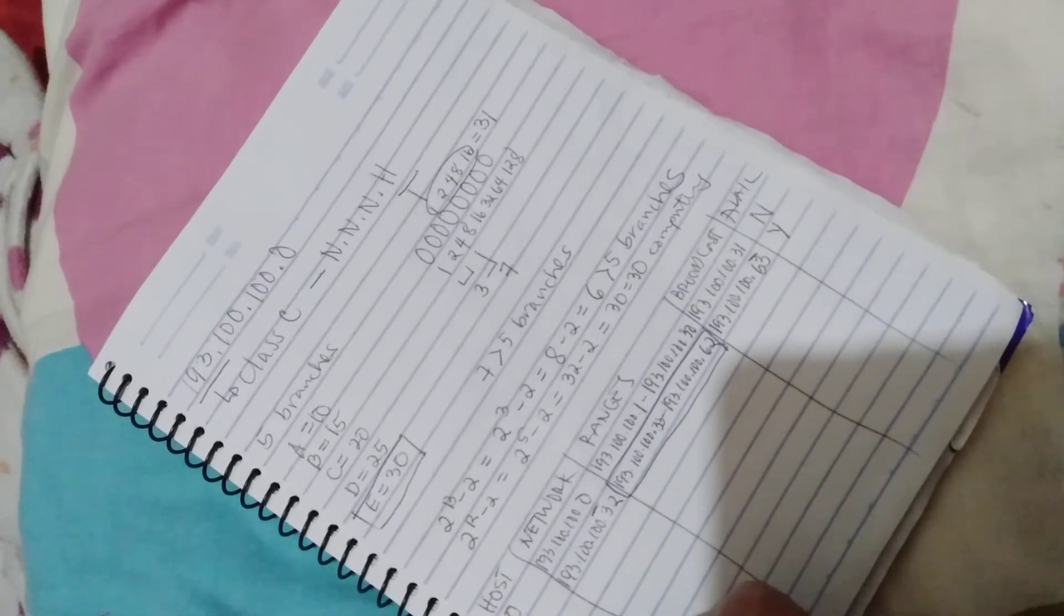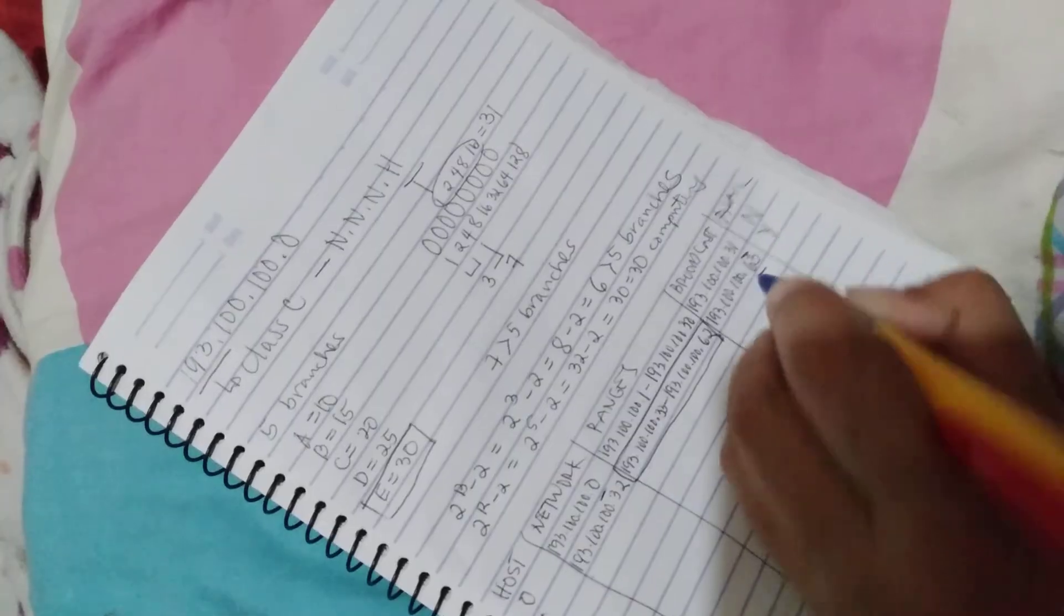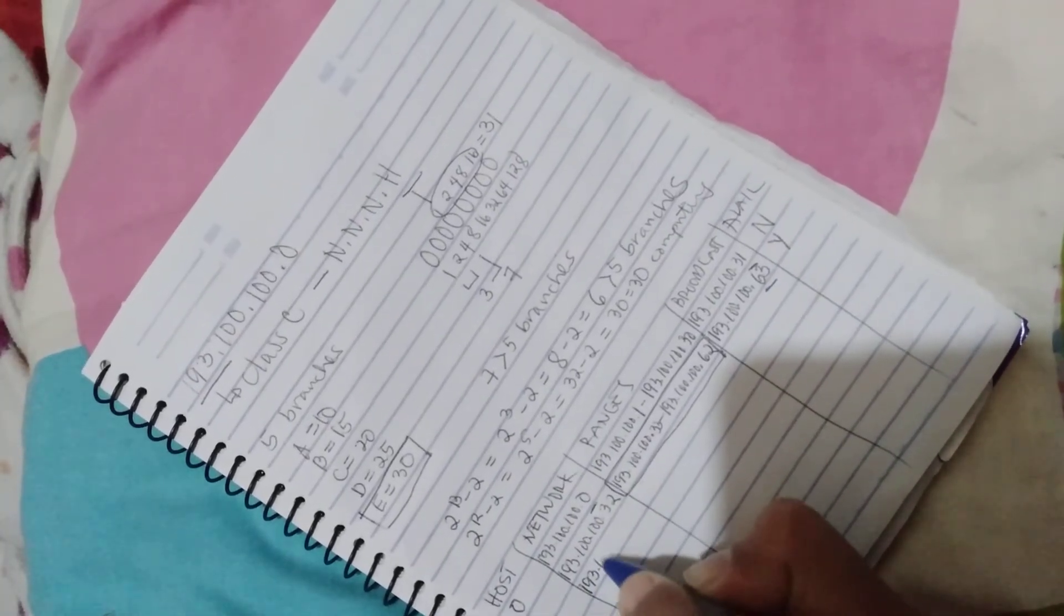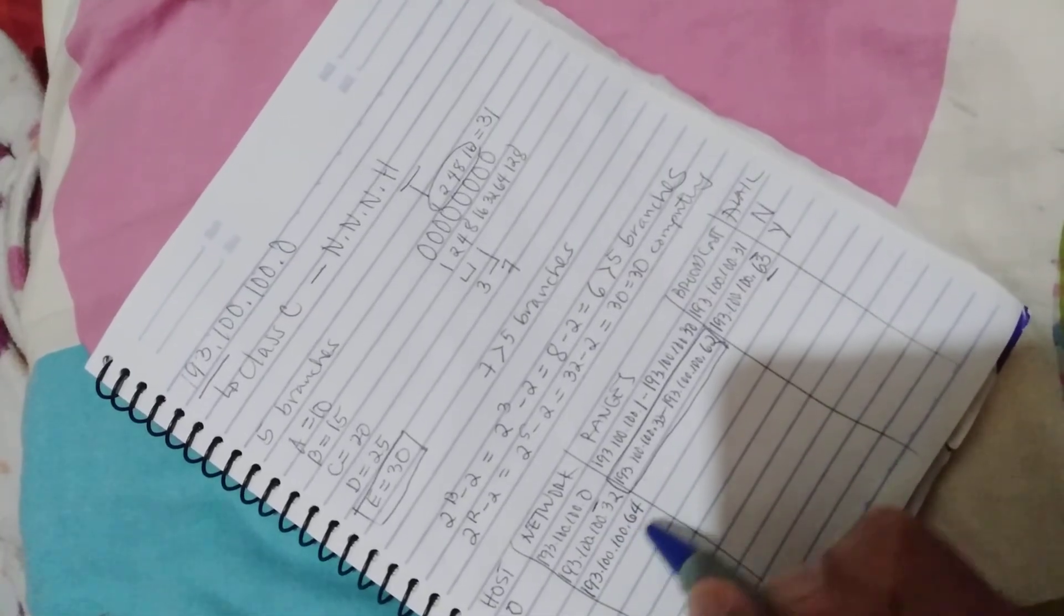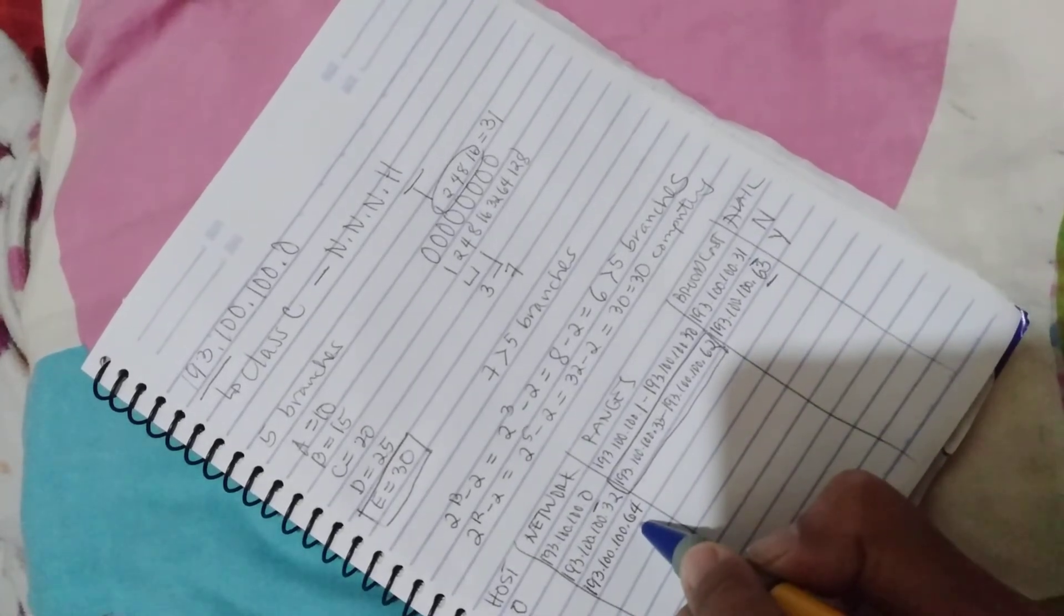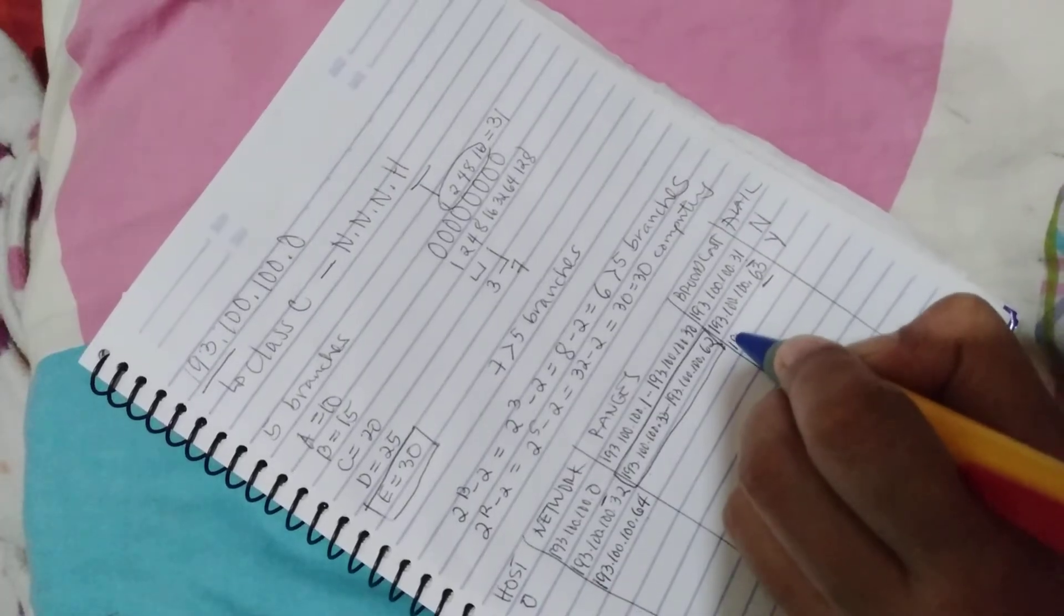Next, host number 2. Since this is 63, the next network is 193.100.100.64. Then you will add again 31 to 64.